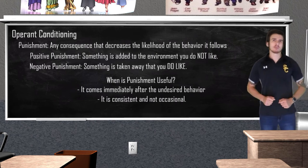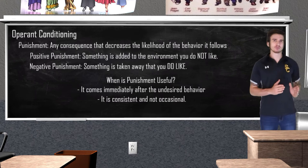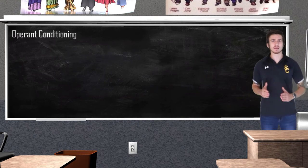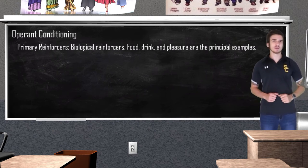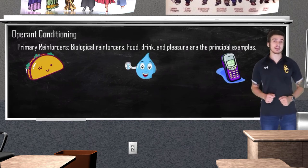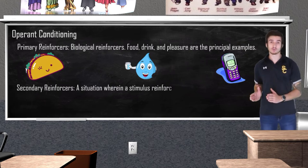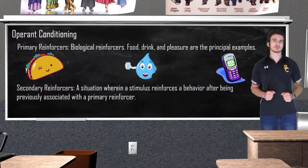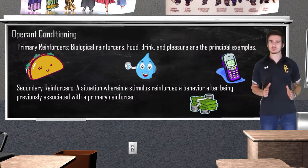Just like classical conditioning, operant conditioning will also include generalization and extinction. It's also important for us to distinguish between primary reinforcers and secondary reinforcers. Primary reinforcers are going to be our biological reinforcers — so anything related to food, drink, and pleasure. Most human reinforcers tend to be conditioned or secondary reinforcers. Secondary reinforcers are reinforcers that have been associated with a primary reinforcer, such as good food and drinks, going to work for a paycheck, or buying new cool clothes.